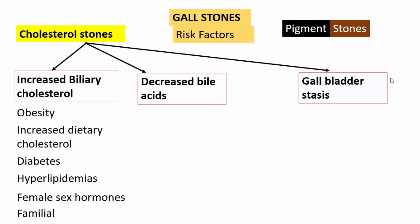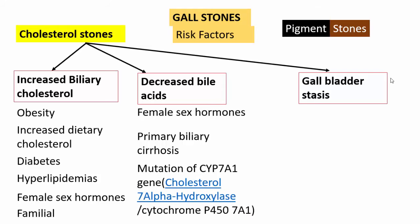Conditions associated with decreased bile acid synthesis include female sex hormones, which not only increase biliary cholesterol but also decrease bile acid secretion. Primary biliary cirrhosis also decreases bile acids. Lastly, mutation of the CYP7A1 gene, encoding the enzyme cholesterol 7-alpha hydroxylase — a cytochrome P450 enzyme — is relevant, as this enzyme mediates the rate-limiting step in bile acid synthesis. Deficiency or mutation of this gene results in decreased bile acid synthesis and increased biliary cholesterol.